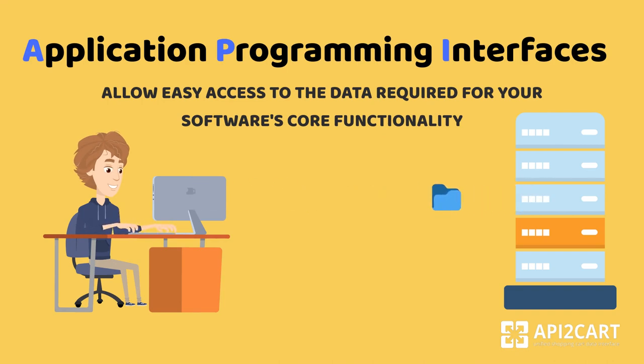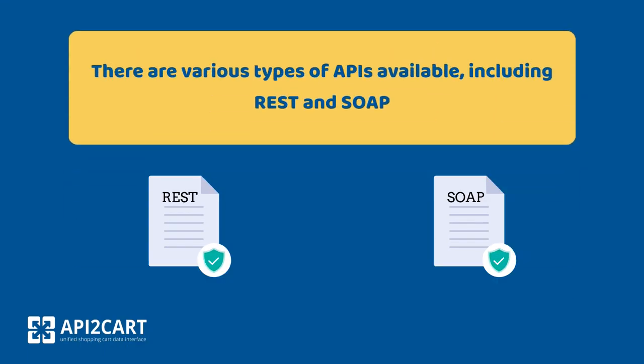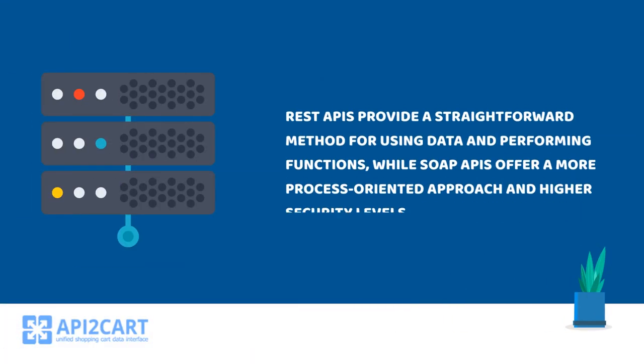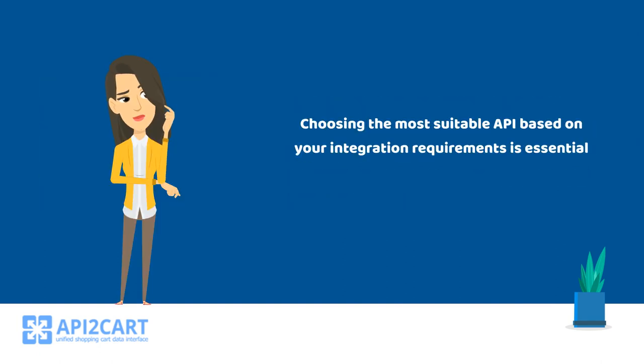But how do you choose the correct API? There are various types of APIs available, including REST and SOAP. REST APIs provide a straightforward method for using data and performing functions, while SOAP APIs offer a more process-oriented approach and higher security levels. Choosing the most suitable API based on your integration requirements is essential.